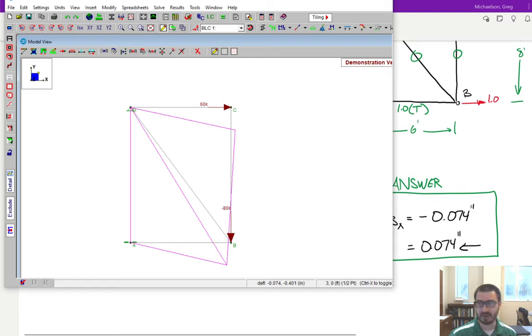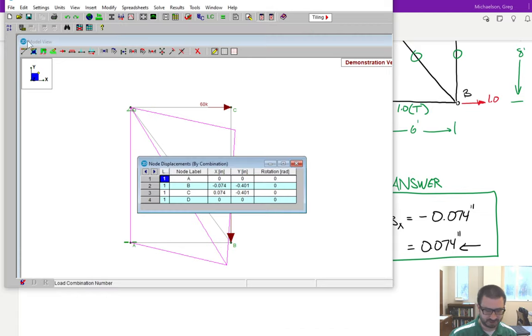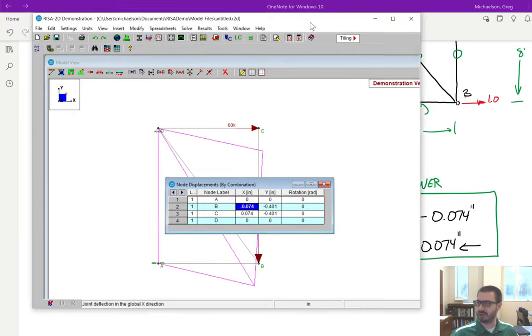And if you actually pull the results, if you go to joint deflections, here are joint deflections, and you can see joint B. There's the deflection 0.074 to the left. It's saying negative because it's saying negative along the x-axis that's to the left. So this is just a taste of things we're going to discuss later on in the course.